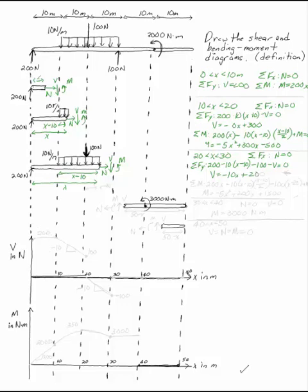And if I take the sum of the moments, I now have 200 times x minus 10x minus 10 times x minus 10 over 2. That's the same as we had before. Now I have minus 100 times x minus 20 plus m equals 0. Multiply that out. m is now minus 5x squared plus 200x plus 1500. That's the equation for my line between 20 and 30.